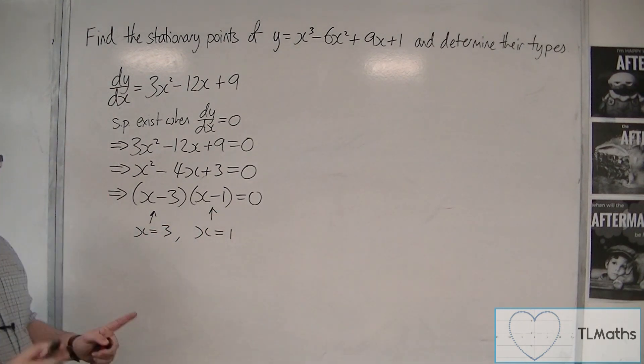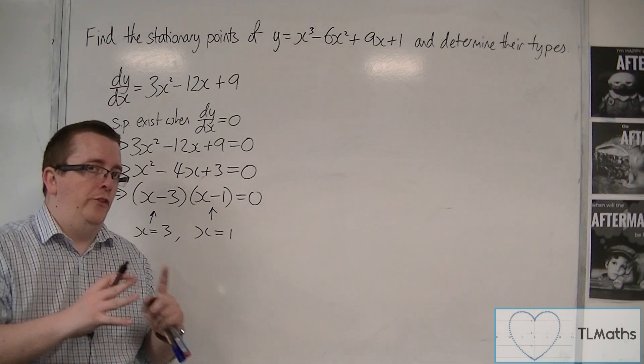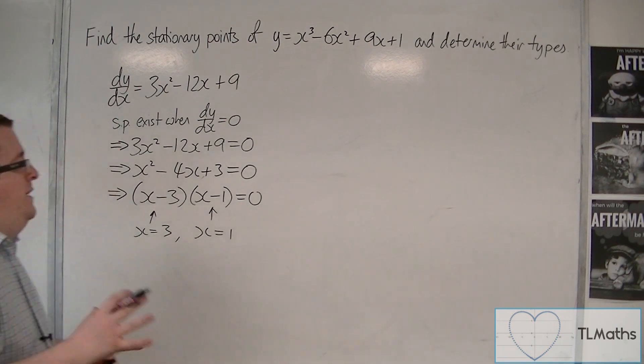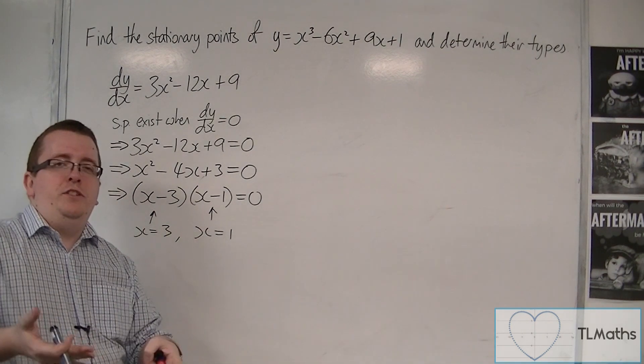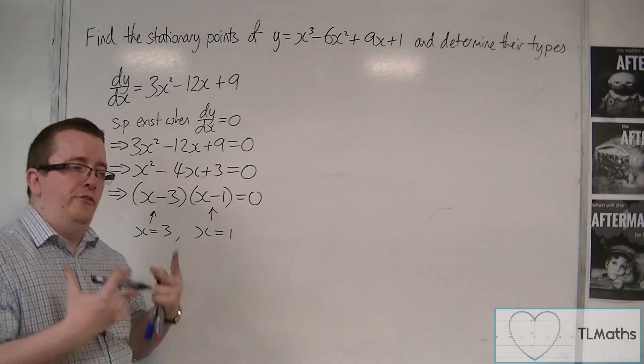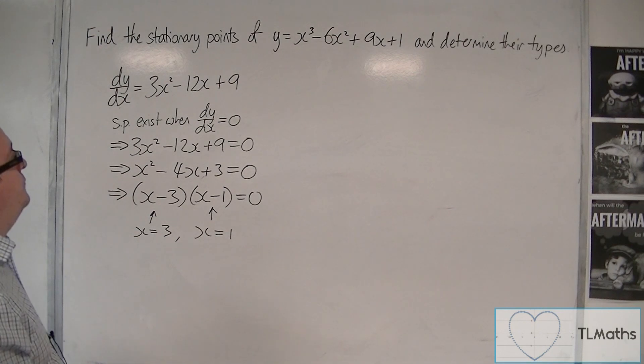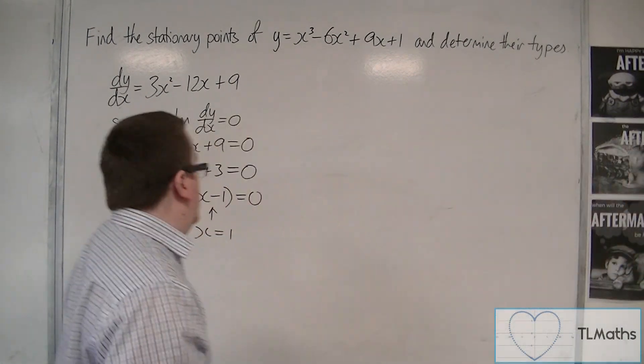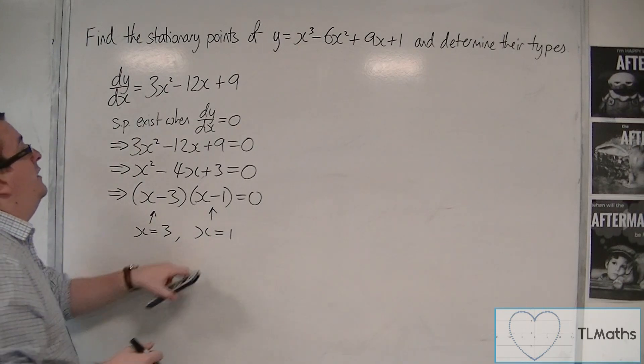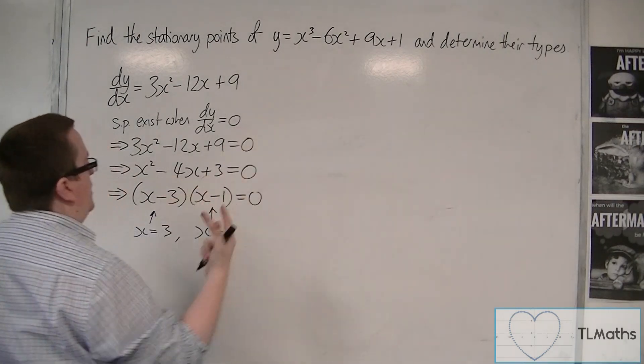That's found us the x values of the stationary points. Now, because it's asked for the stationary points, we really should find the whole coordinate, so find the y value as well. What we need to do is substitute x = 3 and x = 1 into that to find the y coordinate.